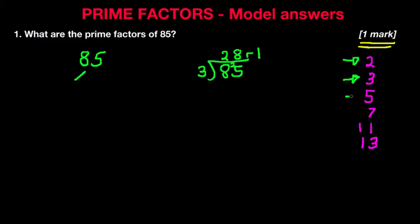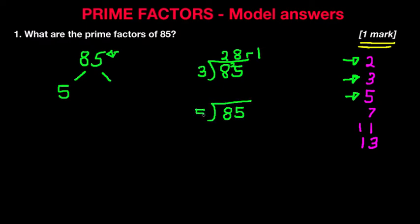So now we move on to the next prime number, which is 5. Now because 85 ends with a 5, we know that it can be divided by 5. And we can show some workings out: 85 divided by 5. 5s into 8 is 1, remainder 3. And 5s into 35 is 7. There are no remainders.